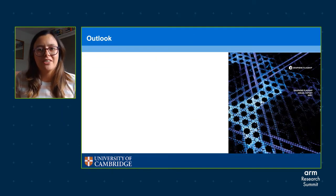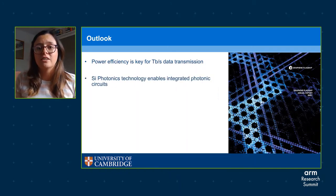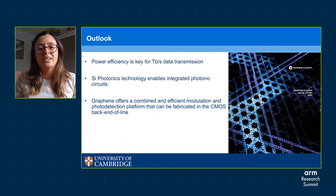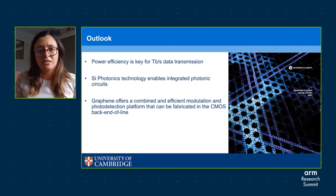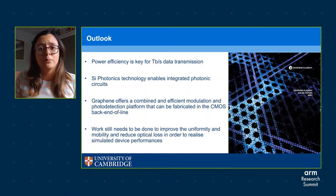To summarize: power efficiency is key for terabit per second data transmission and low power interconnect solutions are necessary to process vast amounts of data as data rates keep climbing. Silicon photonics is a promising technology to produce integrated photonic circuits and make low cost, low power optical devices. Graphene is a promising material that can provide a combined photodetection and modulation platform integrated in the back-end-of-line CMOS fabrication. It is now an engineering problem to improve the growth and processing techniques so that we can realize graphene's theoretical potential. Thank you very much for listening and I welcome any questions.